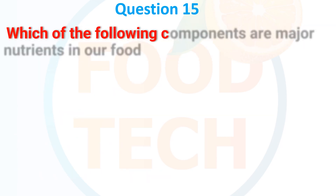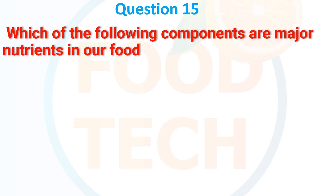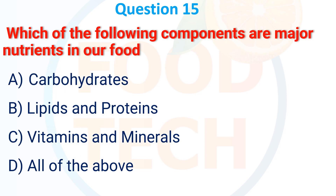Question 15. Which of the following components are major nutrients in our food? A. Carbohydrate. B. Lipid and protein. C. Vitamins and minerals. D. All of the above. The correct answer is D: all of the above.